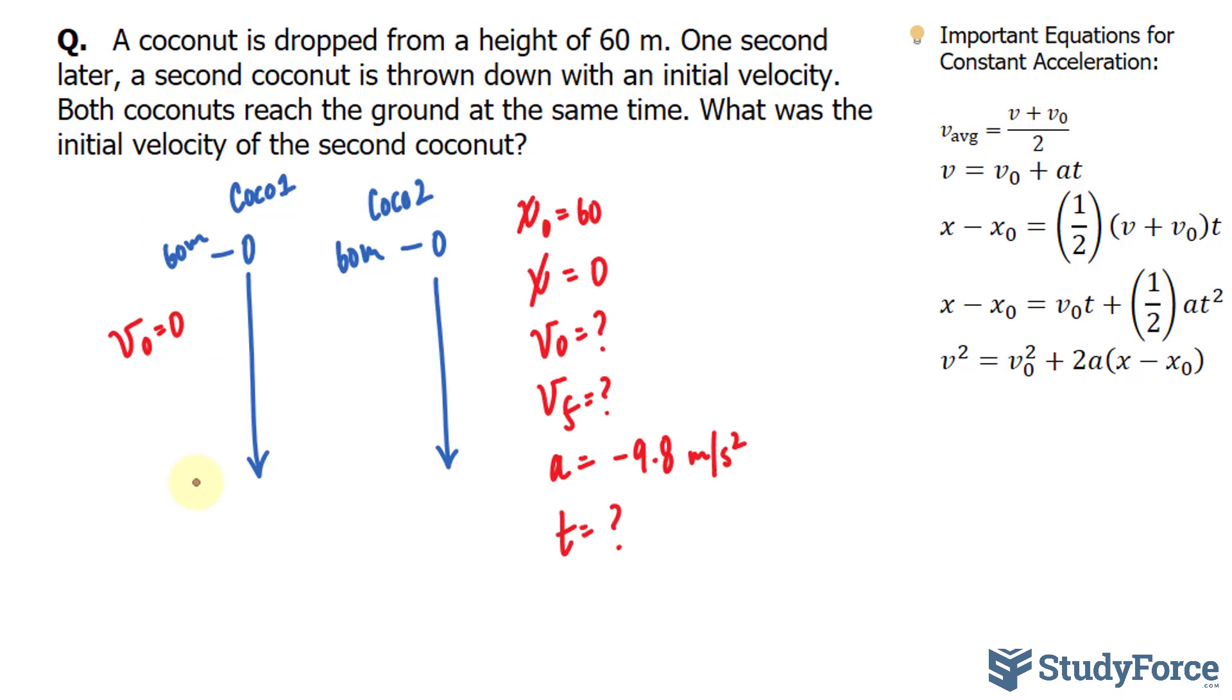Let's write down the information for coconut one. Again, it's pretty much the same. 60, the final is zero, the final velocity is unknown, the acceleration is the same as negative 9.8, and the time we don't know. The way I'll solve this is first find out how far coconut one has reached after one second.